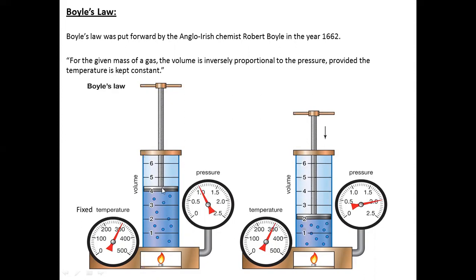If we increase the volume here, you can see on the pressure gauge that the pressure has decreased. It means if volume is increased, then pressure will decrease — volume is inversely proportional to the pressure. One thing is increasing and the other thing is decreasing. From that particular figure, we come to know that volume is increasing and pressure is decreasing.